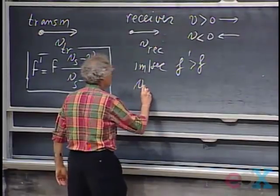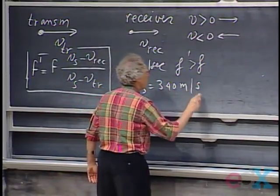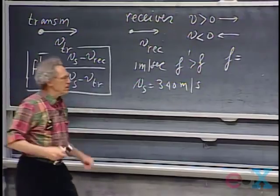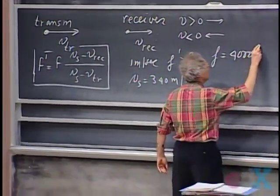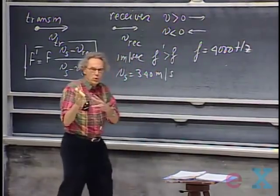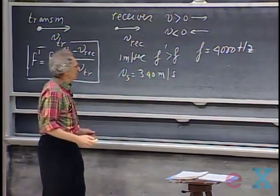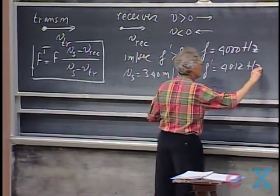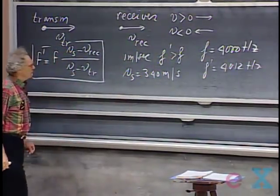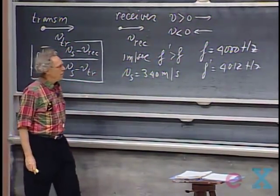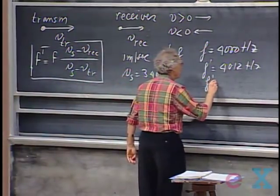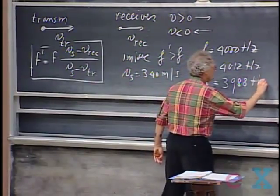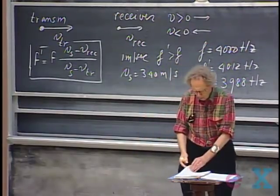The speed of sound is 340 meters per second. So if F — the frequency that I will produce — is 4000 hertz, then if I move toward you with one meter per second, the frequency you will experience is about 4012 hertz. It's up by about 0.3%, which is the ratio one divided by 340. And if I move away from you with one meter per second, the frequency you will hear is about 12 hertz lower — about 0.3% lower.